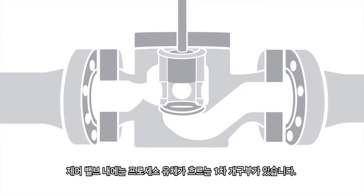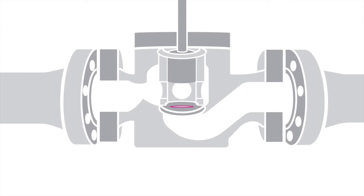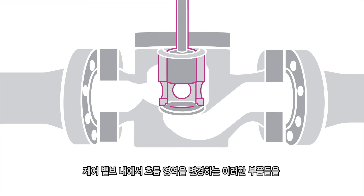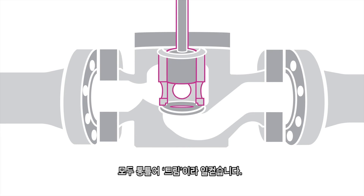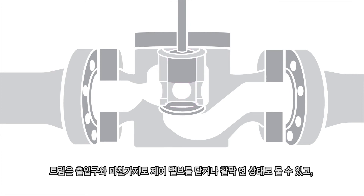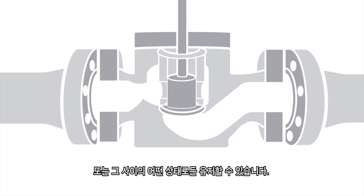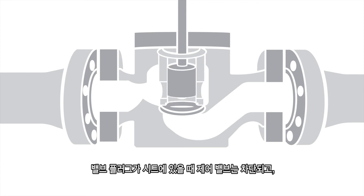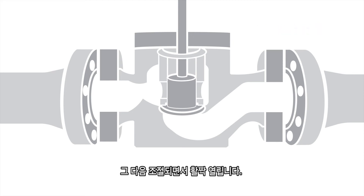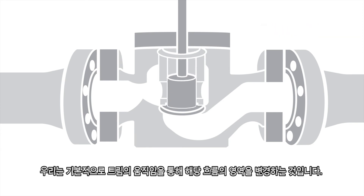Within the control valve, there is a primary opening through which the process fluid will flow. The parts that change the flow area within the control valve are collectively referred to as trim. Just like the doorway, there are different positions you can put the control valve in, from closed to wide open or anywhere in between. A control valve has a shutoff when the valve plug is on the seat, then it throttles and goes to wide open. Basically, all we're doing is changing that flow area via movement of the trim.